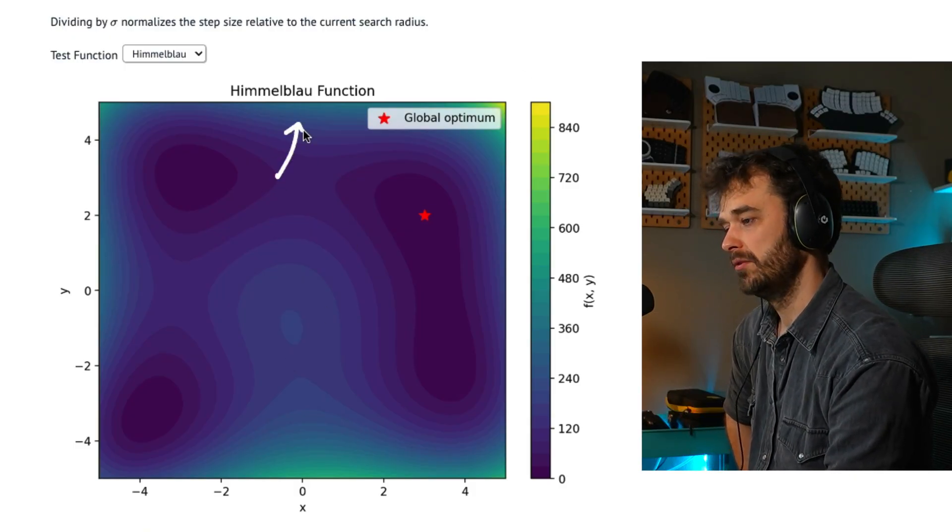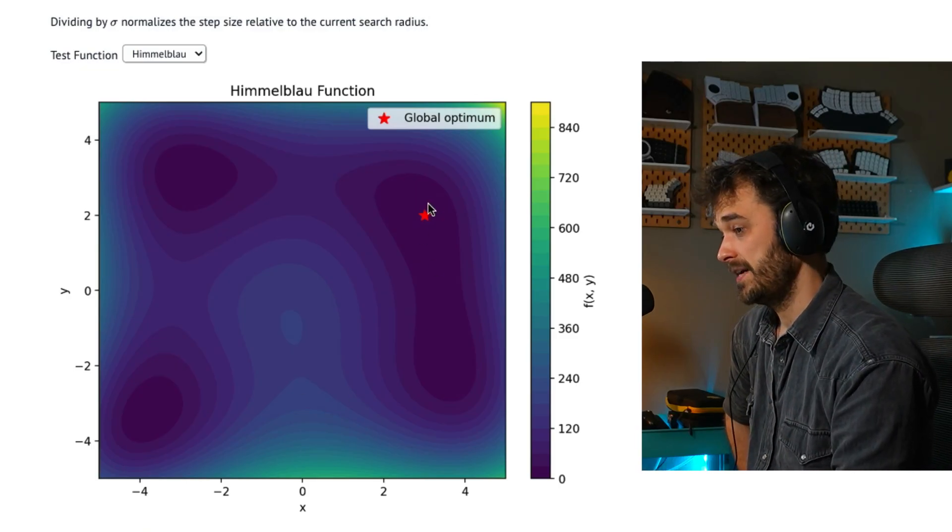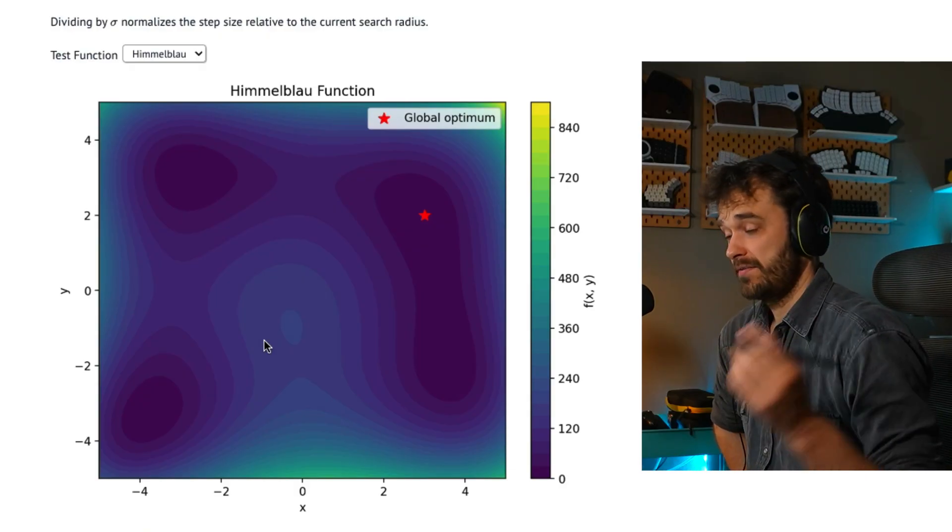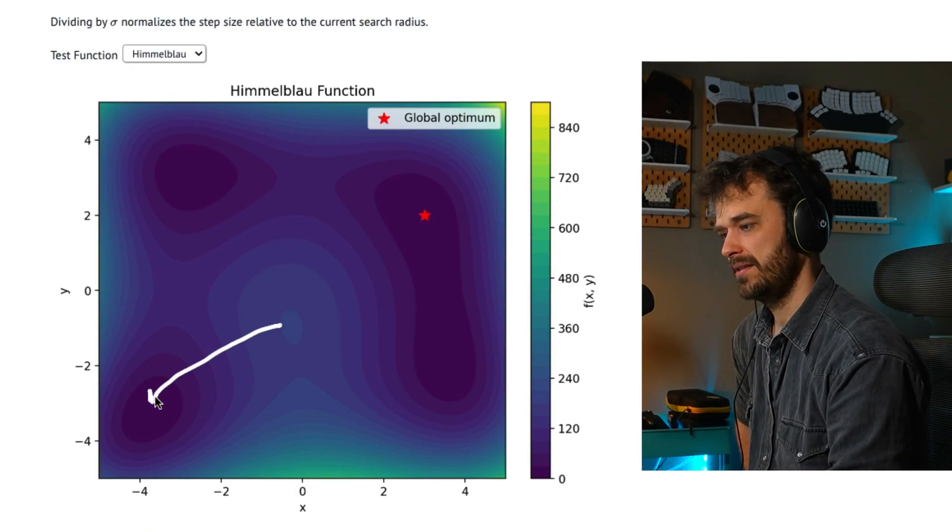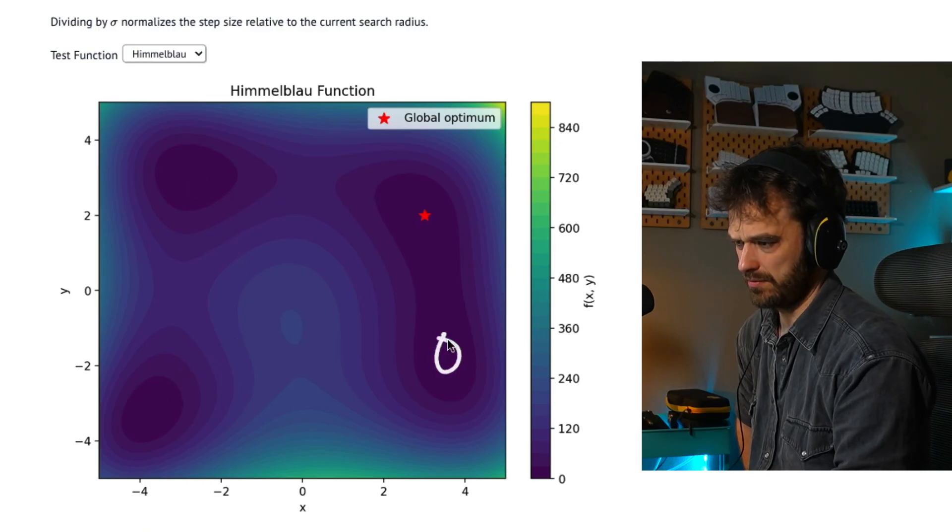So what you're looking at over here is the Himmelblau function. And just to set the stage, the goal here is to find the global optimum, which is located over here. But as you can see, if you're trying to find the lowest point, there's a risk that if you start doing hill climbing, you're going to go down and down and down, and you're going to end up in a local optima over here, or maybe over here, or maybe even down below over here.